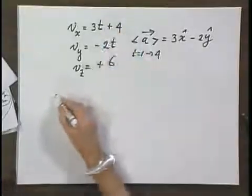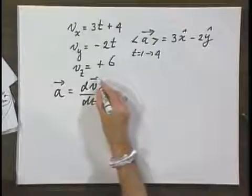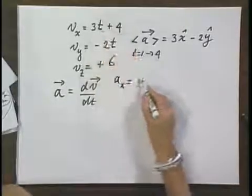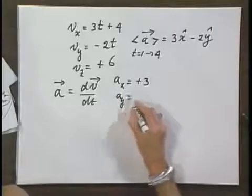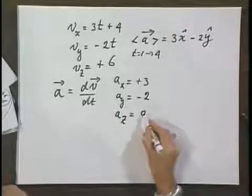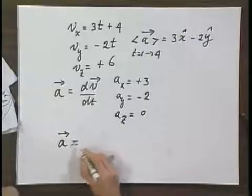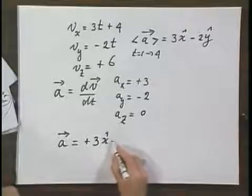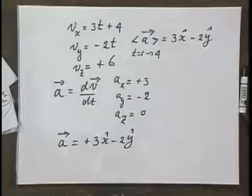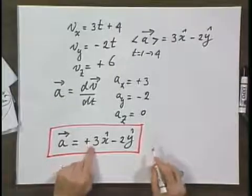Now, let's calculate the instantaneous acceleration a, which is dv dt. a of x equals plus 3, a of y equals minus 2, a of z equals 0. So what is the instantaneous acceleration at any moment in time? That is plus 3x-roof minus 2y-roof.